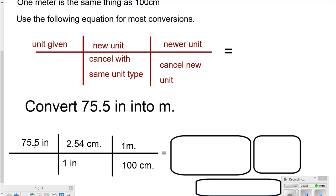Therefore, we go 75.5 times 2.54 times 1, all of this divided by 1, or sorry, times 100. The setup looks like this: 75.5 times 2.54 times 1 meter divided by 1 times 100.